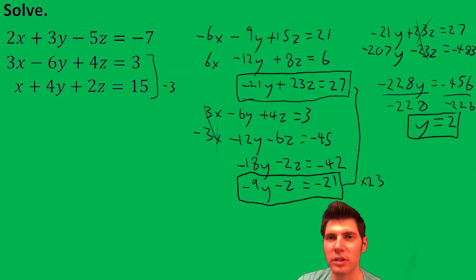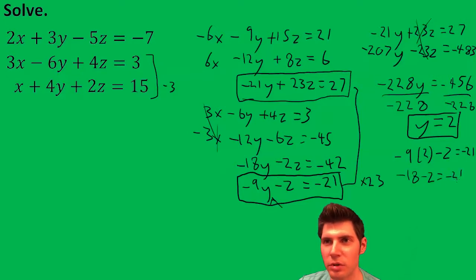Now I can plug the y equals 2 into any of my equations. I'm going to plug it in down here. So I'm going to get negative 9 times 2 minus z equals negative 21. This is negative 18 minus z equals negative 21. I'm going to add 18 to both sides. Negative z equals negative 3. We get z equals 3.